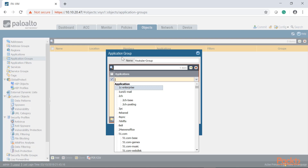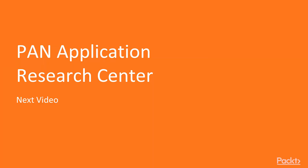We just finished the application objects and groups video. In the next video, we'll understand how to use and find information on the Palo Alto Networks Applipedia. This will allow us to build application groups by selecting the right dependencies for those application objects. Let's continue on to understanding Palo Alto Networks Applipedia.